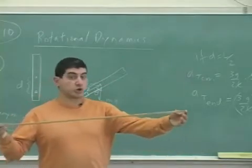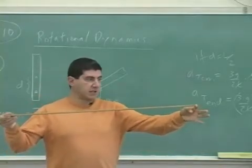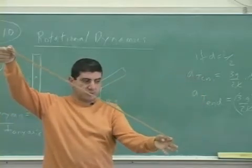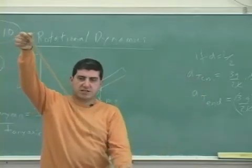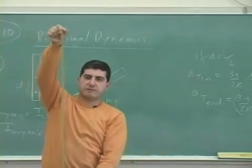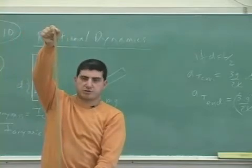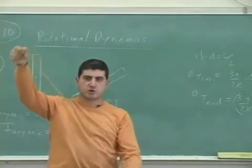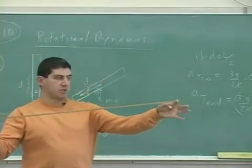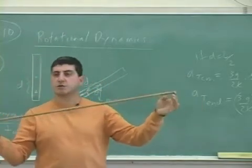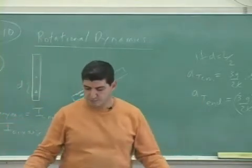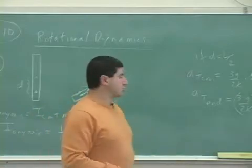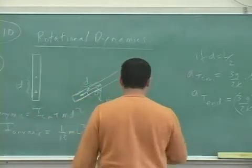This acceleration greater than G only occurs for a split second. After the rod rotates past the horizontal, the acceleration becomes less and less. By the time it falls to vertical, the acceleration is zero. So momentarily, you can achieve acceleration greater than G.